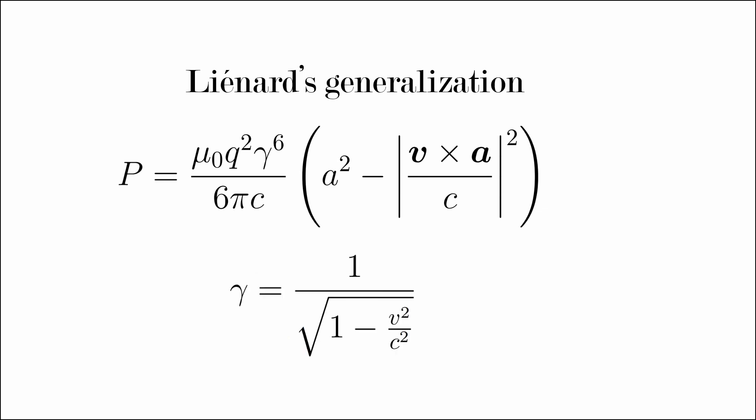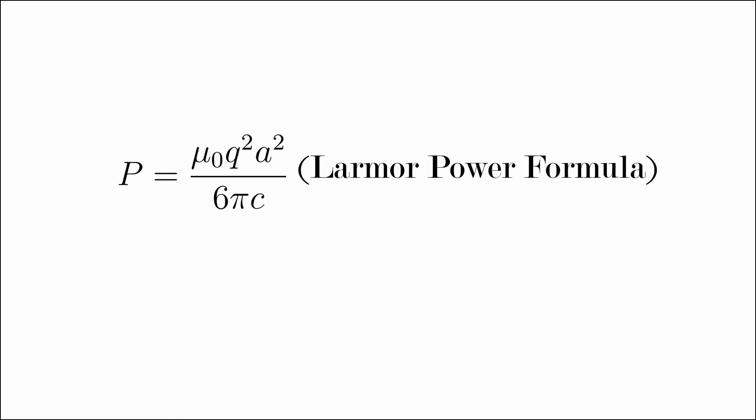The factor gamma to the power of 6 implies that the radiated power increases enormously as the particle velocity approaches the speed of light. This generalization, when v equals zero, reduces to the Larmor formula as expected.